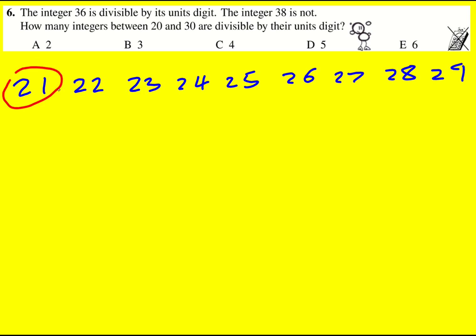So 21, yes, divisible by 1. 22 is even, yes, divisible by 2. 23, no, not divisible by 3.